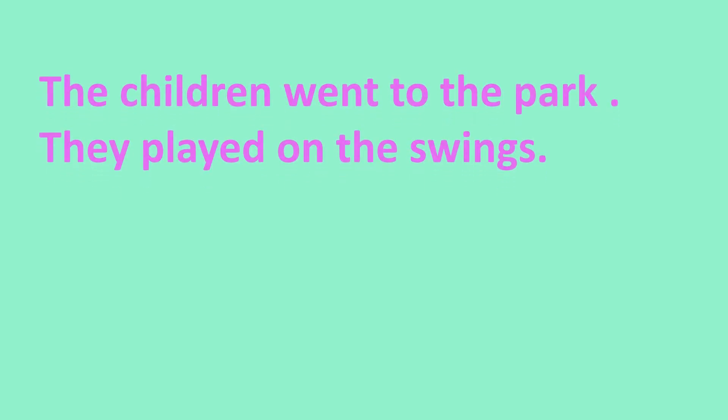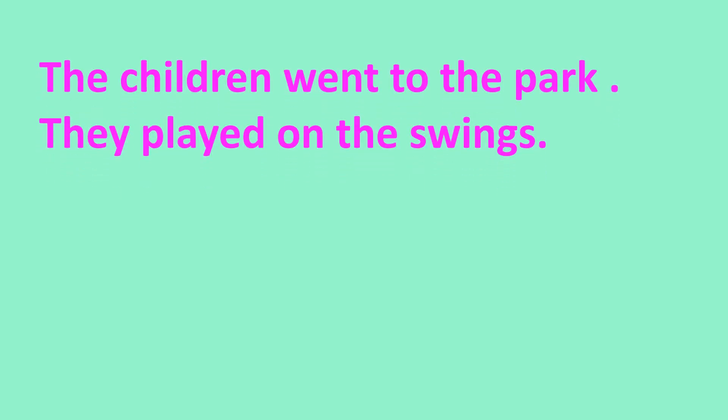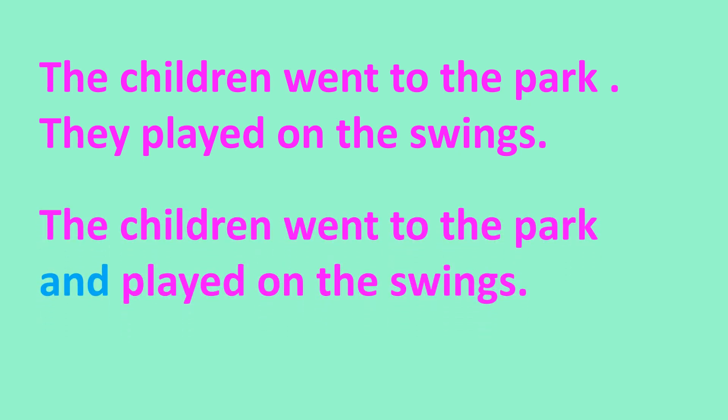Moving on: 'The children went to the park. They played on the swings.' This is adding more information, so we use 'and': The children went to the park and played on the swings. I have dropped 'they' because it refers to the children already mentioned. Notice again — when the conjunction comes in, the full stop and the capital letter of the second sentence are dropped.